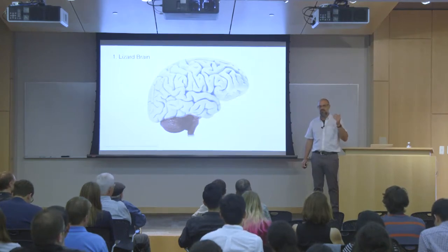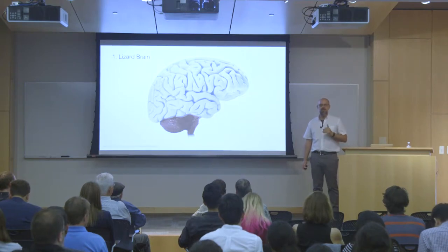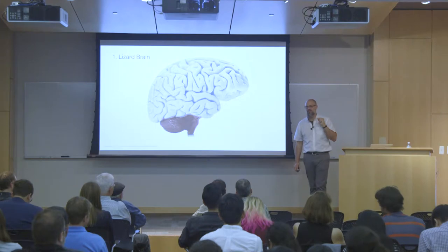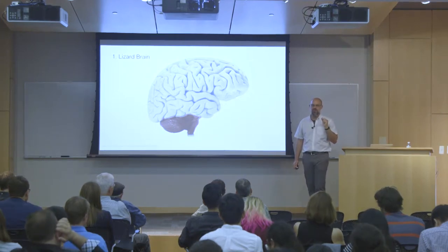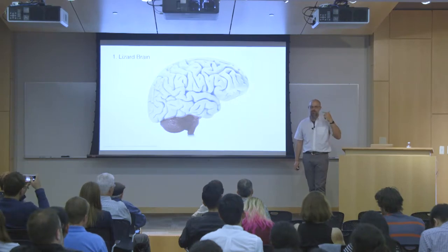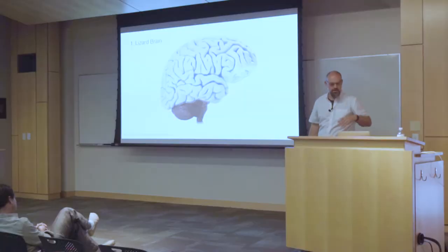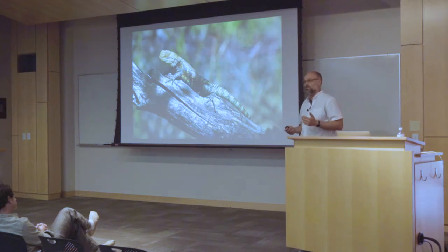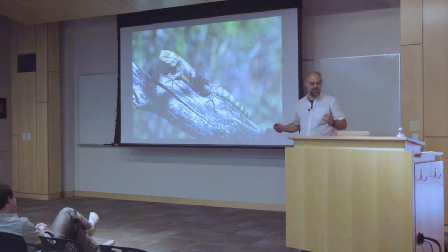Do I fight it? Do I eat it? Do I have sex with it? Do I run? It's the part of the brain that pulls our hand away from the stove when it's too hot before we even think about it — we don't go through a deliberate chain of thought. And that's basically what we share with that lizard looking around the world: can I eat it, can I have sex with it, do I need to run from it, do I fight it?